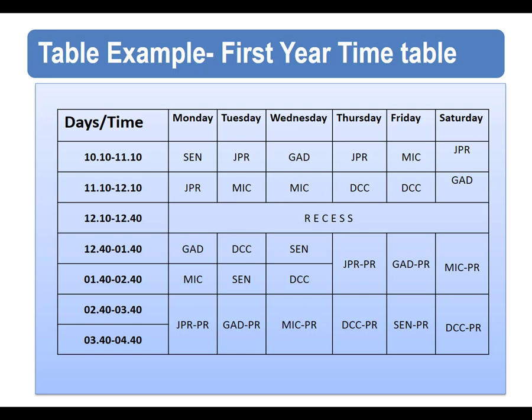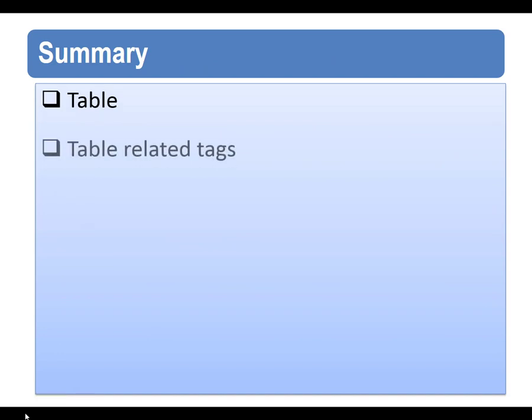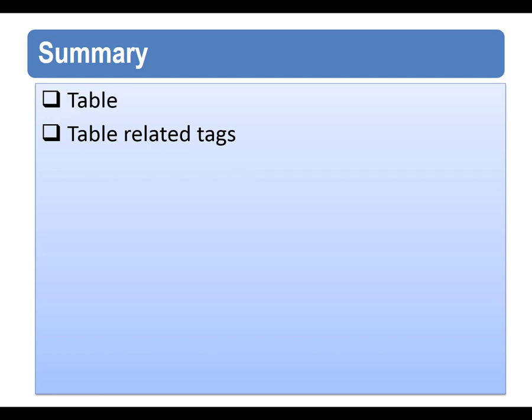Let us discuss the colspan attribute with an example. If you look at the table cell that contains the word 'recess', you will see that the value of the colspan attribute is 6, which indicates that the cell should run across 6 columns. So this is what covers HTML tables — the different table-related tags and the attributes related to those tags.